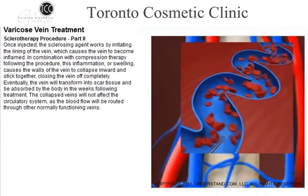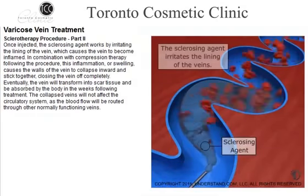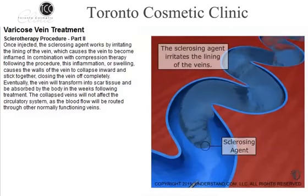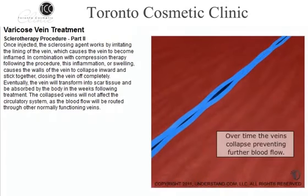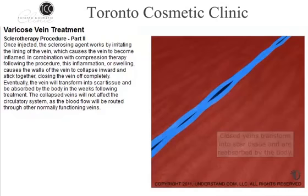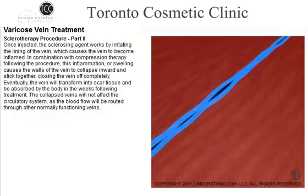Once injected, the sclerosing agent works by irritating the lining of the vein, which causes the vein to become inflamed. In combination with compression therapy following the procedure, this inflammation, or swelling, causes the walls of the vein to collapse inward and stick together, closing the vein off completely. Eventually, the vein will transform into scar tissue and be absorbed by the body in the weeks following treatment. The collapsed veins will not affect the circulatory system, as the blood flow will be routed through other normally functioning veins.